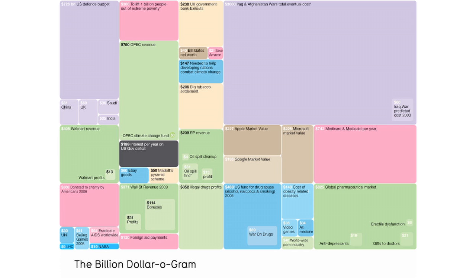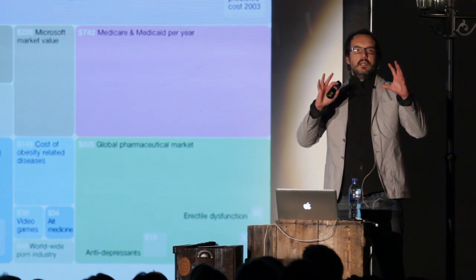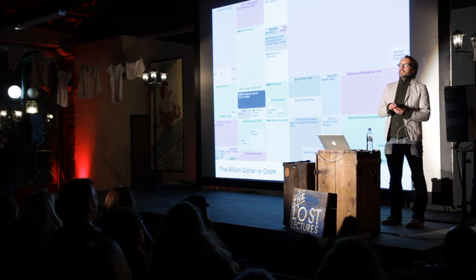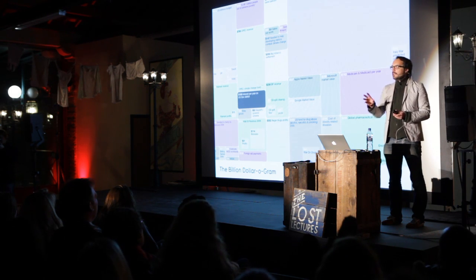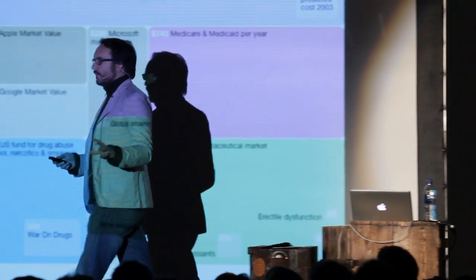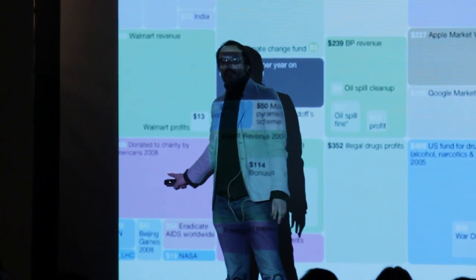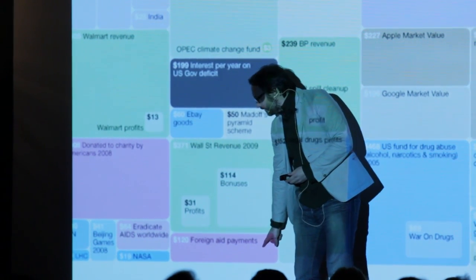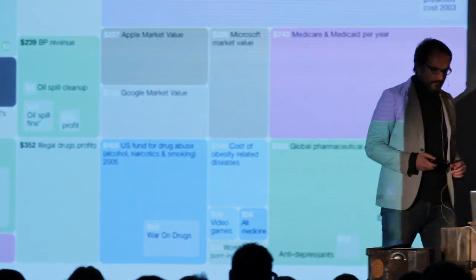This is what I call the billion dollar-o-gram. I scraped these numbers and scaled the boxes according to these amounts. The colors represent motivation behind the money — green is spending money, pink is giving money away, and so on. By visualizing information this way, you have a different kind of relationship to the numbers — you can literally see them. You can start to see connections and patterns that would otherwise be scattered across multiple news reports. Like, American people give over $300 billion a year to charity personally, compared with just $120 billion given by top industrialized nations in foreign aid.